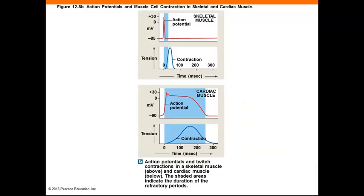When you compare cardiac action potentials and muscle cell contractions to skeletal, there's quite a bit of difference. Skeletal muscle action potentials last about 10 milliseconds, whereas cardiac contractile cells' action potentials last 250 to 300 milliseconds — much more sustained. And as with all muscle tissue, until the membrane repolarizes, it can't respond to another stimulus.